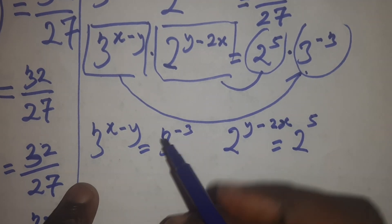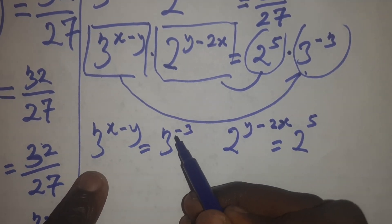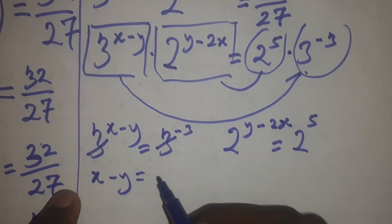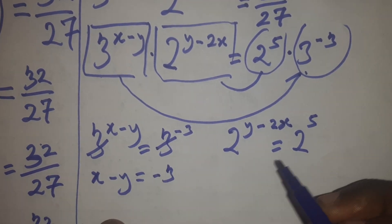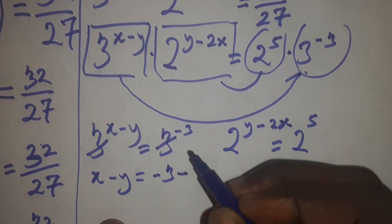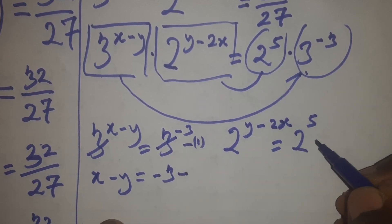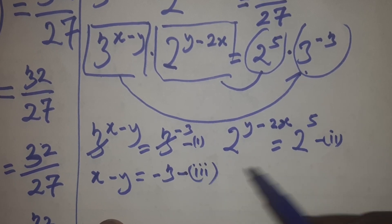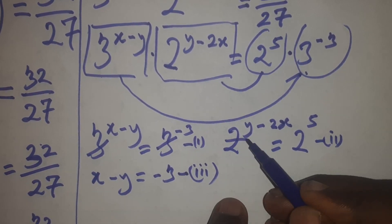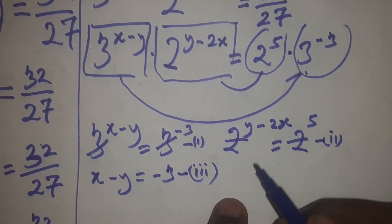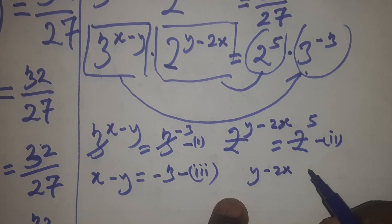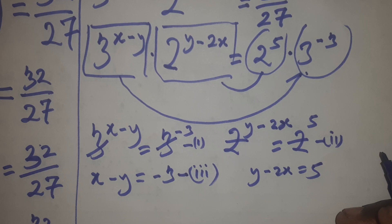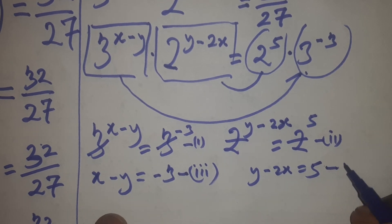Cancelling the bases since they are the same, I get x minus y equals minus 3 — call this equation 3. Then cancelling the bases in the second equation, y minus 2x equals 5 — call this equation 4. I will now solve them simultaneously.